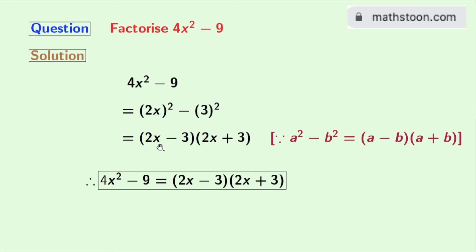So finally, we get 4x square minus 9 is equal to 2x minus 3 times 2x plus 3. This is our desired factorization.